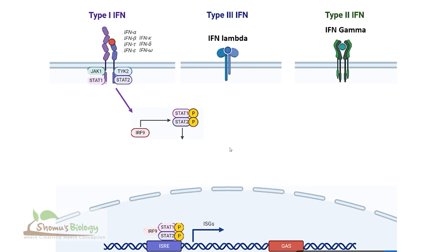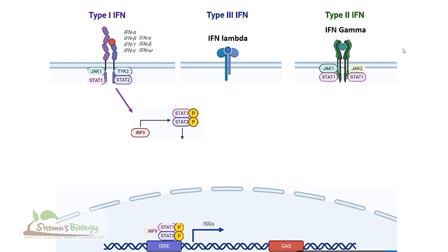Let's look at the type 2 interferon gamma receptor. Here, interferon gamma (shown in green) binds to the receptor. Upon binding, from the cytosol JAK1, STAT1, JAK2, and STAT1 associate with the cytosolic site of the type 2 interferon gamma receptor. This phosphorylates the STAT1 homodimer. The phosphorylated STAT1 homodimer goes inside the nucleus and interacts with the GAS element, which in turn turns on the transcription of ISGs — target achieved.